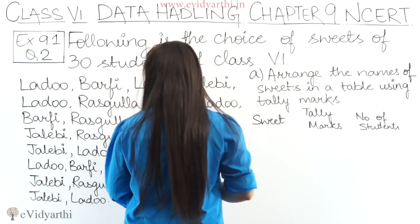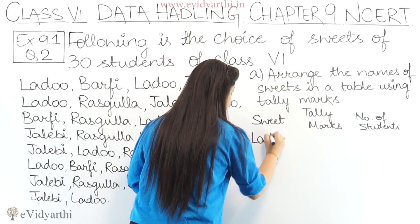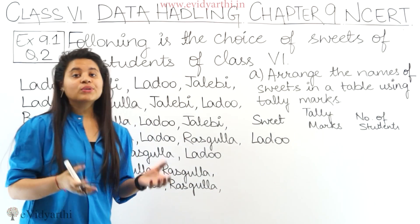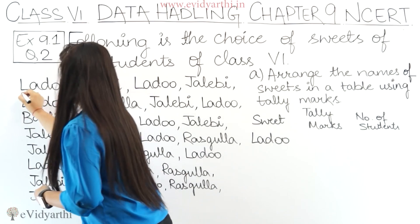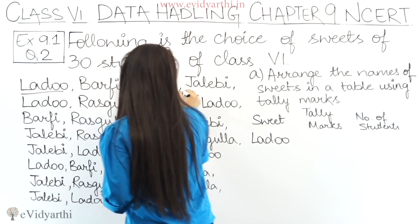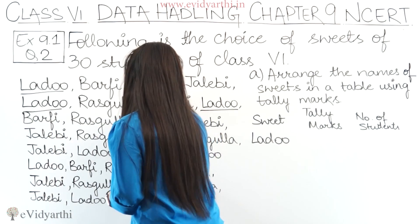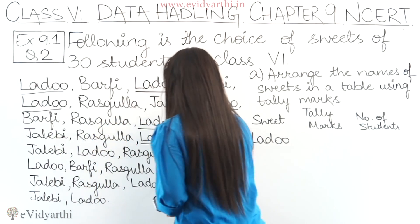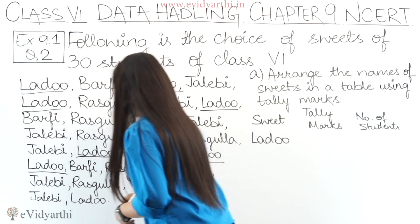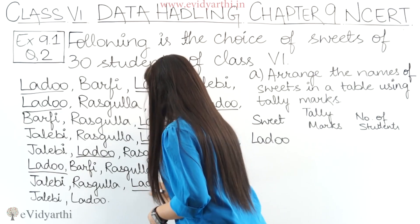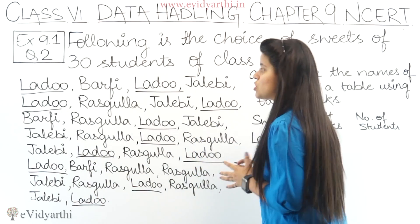Let's start with laddoo. We will count how many children like this sweet. Counting through the data: 1, 2, 3, 4, 5, 6, 7, 8, 9, 10, 11. So we can see there are 11 students who like laddoo.